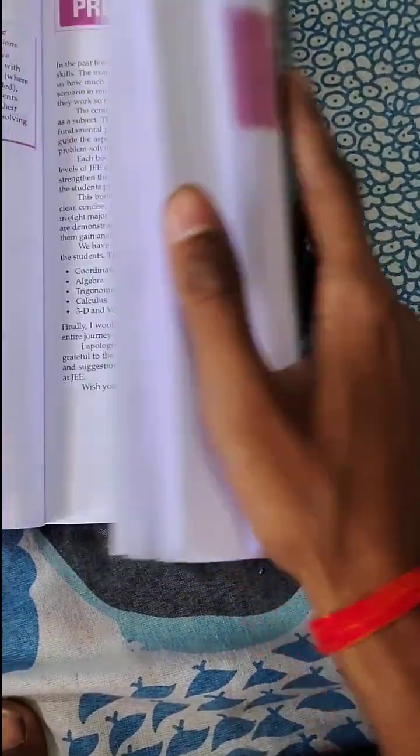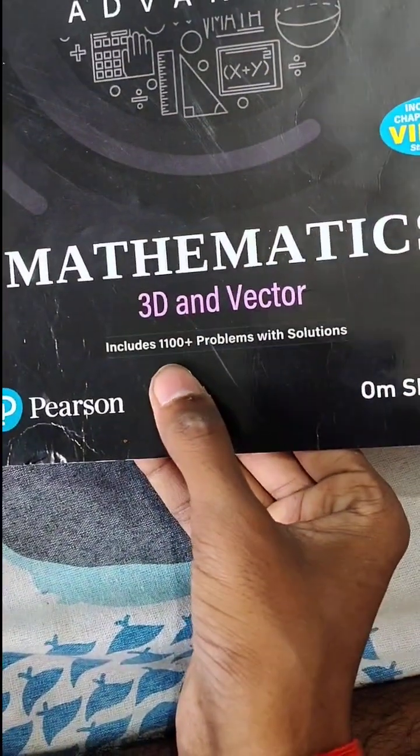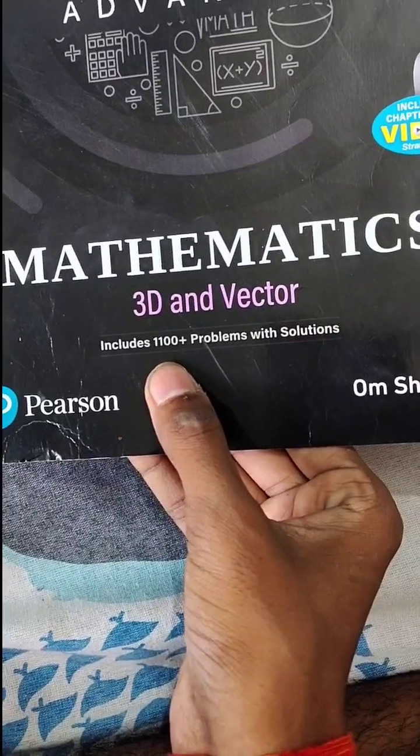And then at the end of the book, you have solutions of all questions. As you see, that includes 1100 plus problems with solutions.